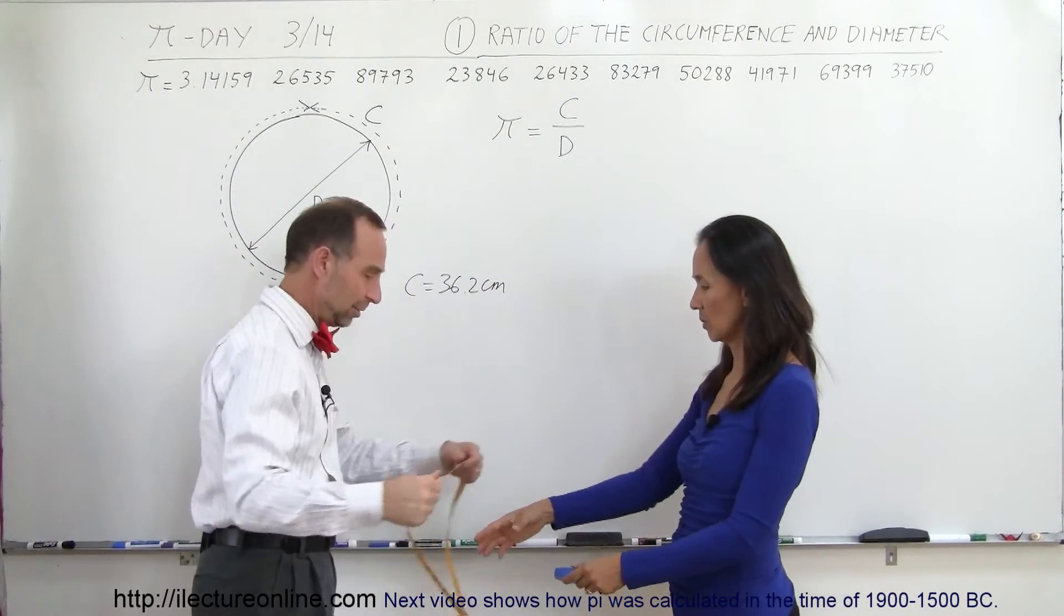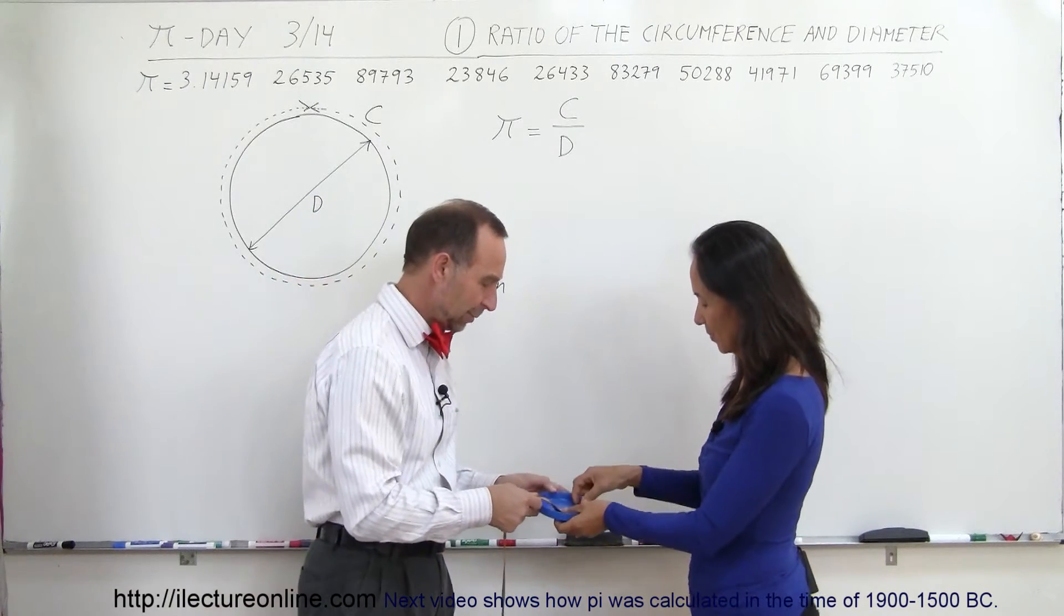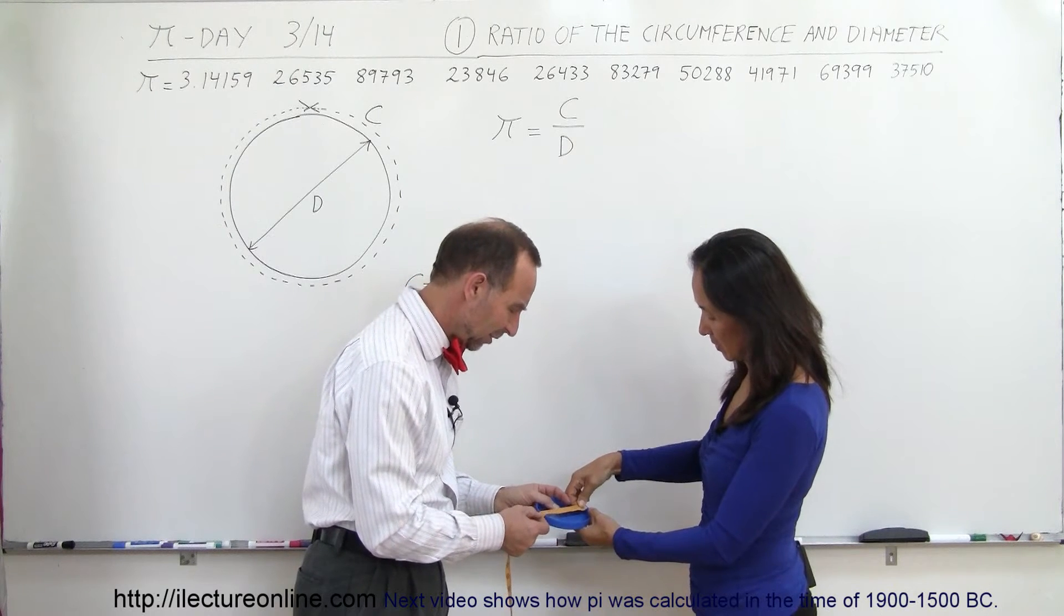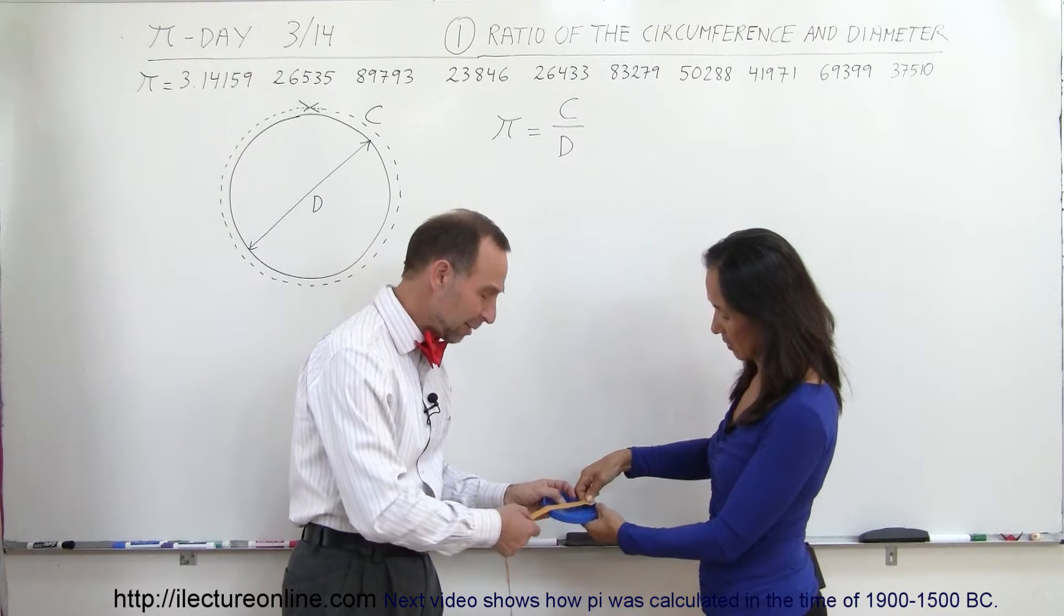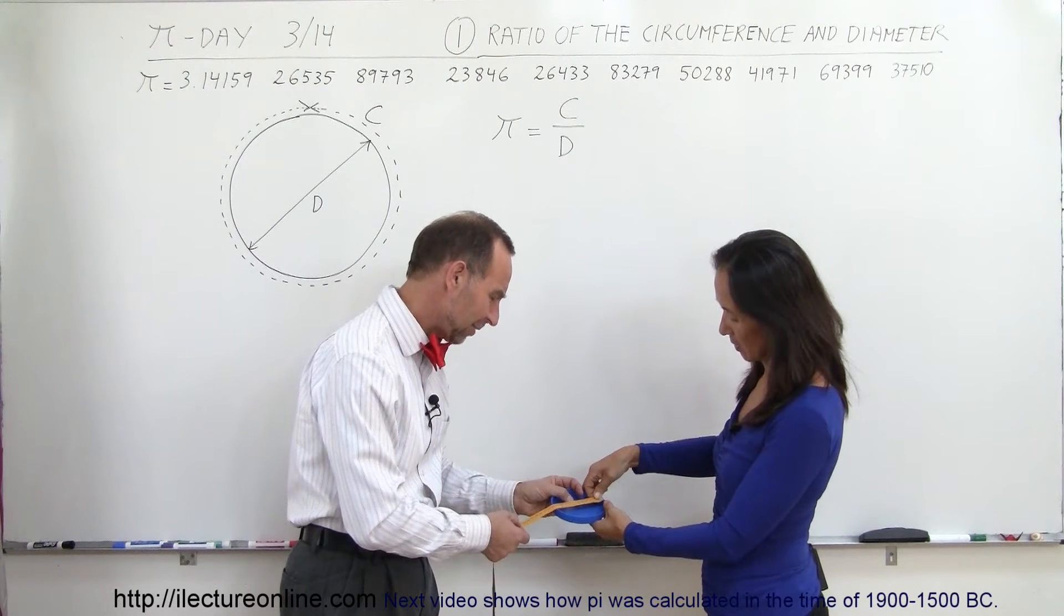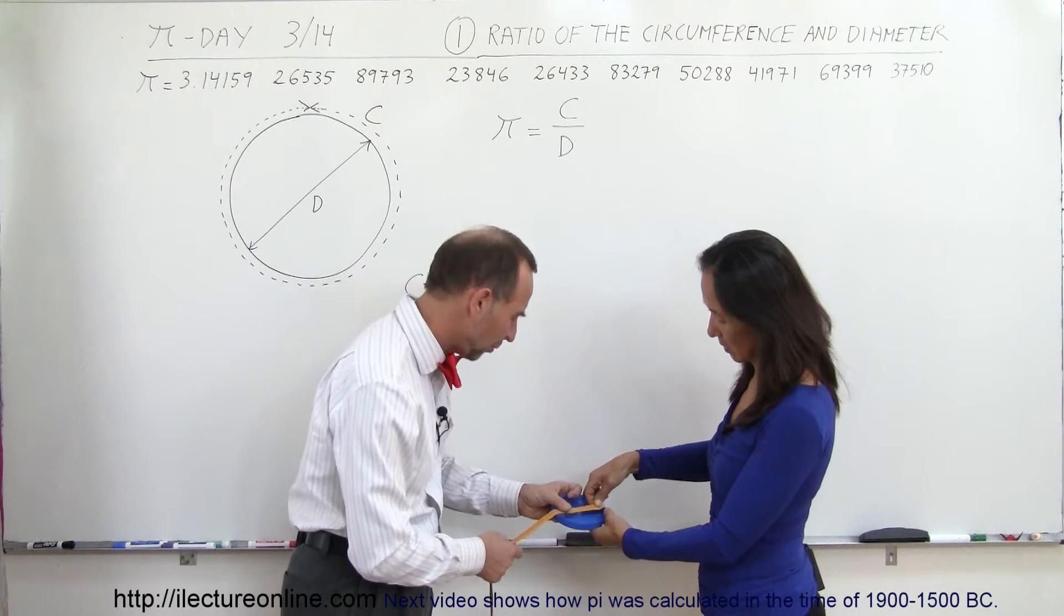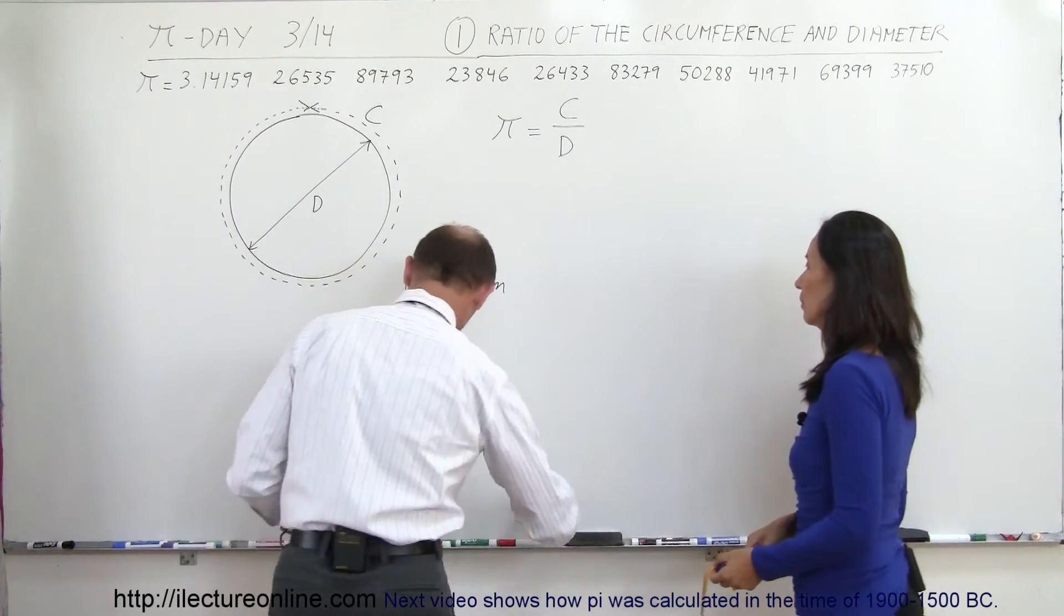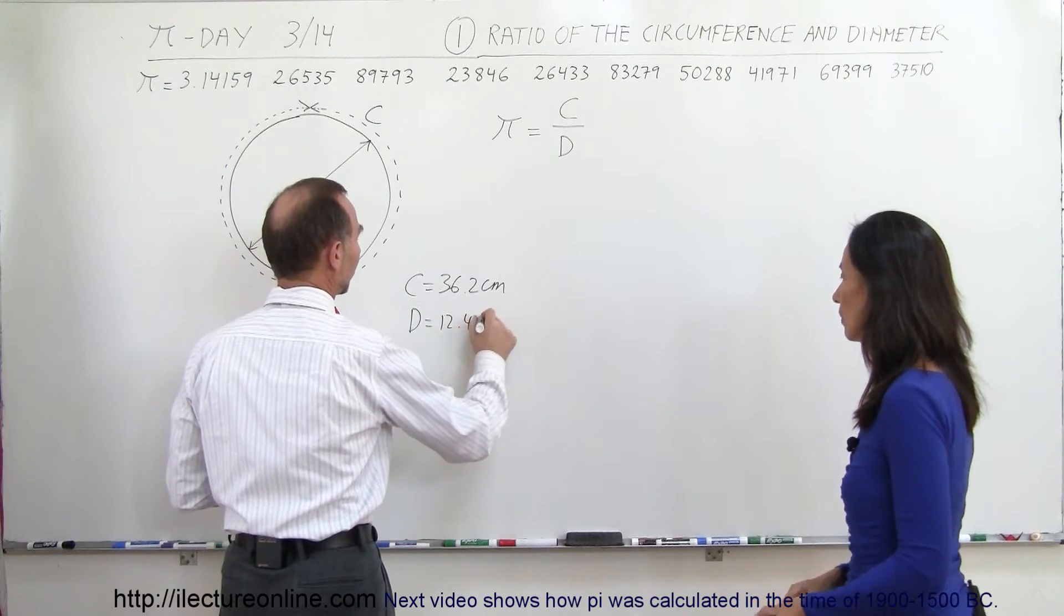And now we need to measure the diameter. Put it right on the edge of the lid. It helps if you kind of move it back and forth like that until you find the maximum value. It looks like the maximum value is right around 12.4. I would say 12.4 centimeters. Diameter equals 12.4 centimeters.